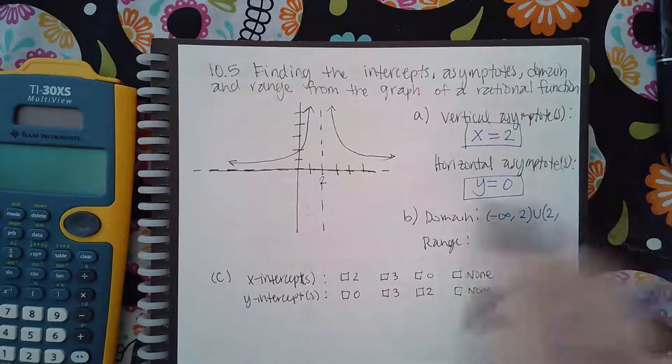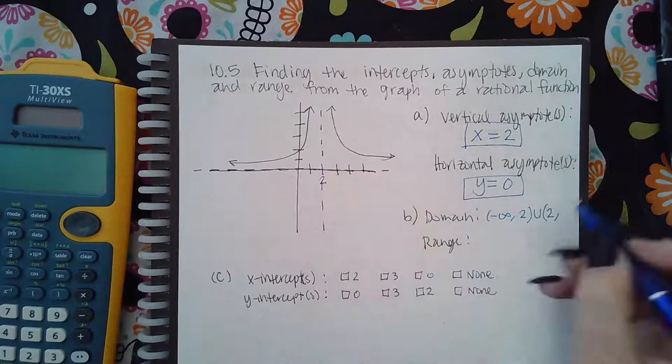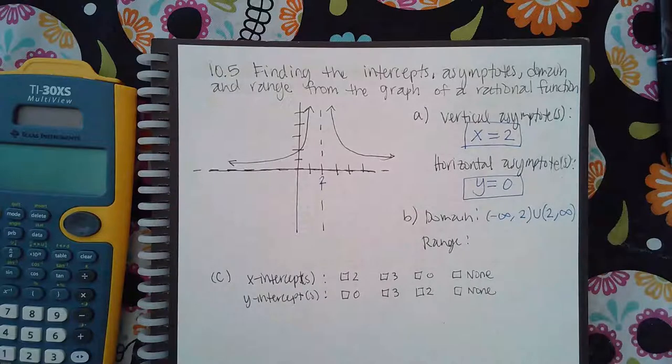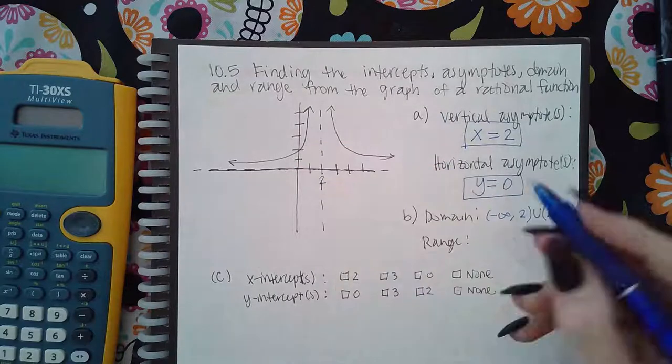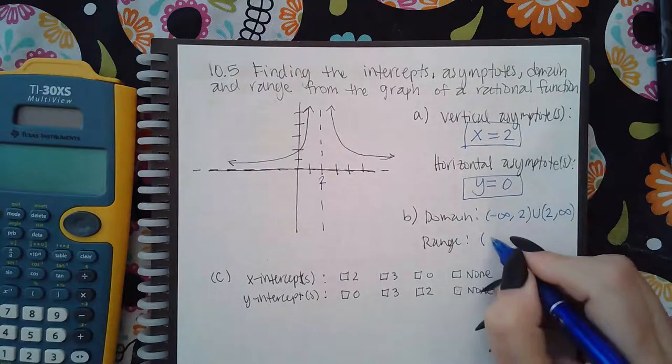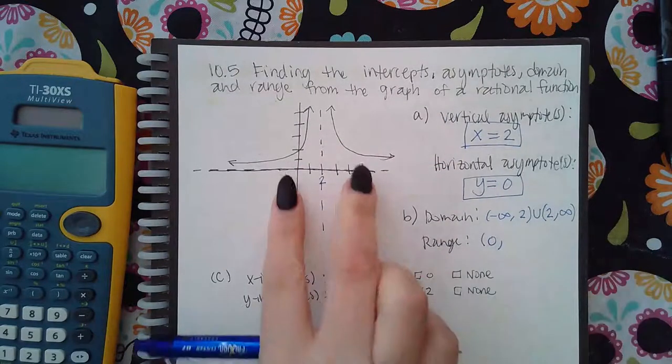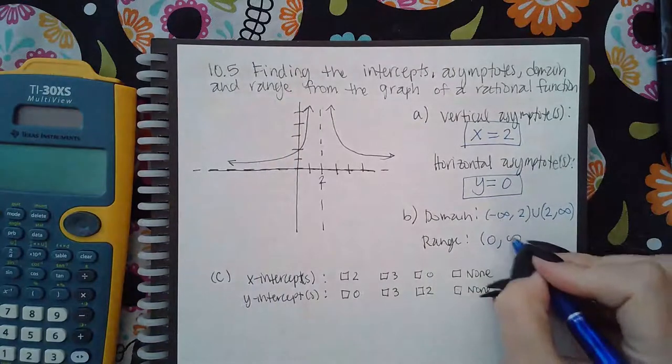Now the range: it doesn't start until it gets above the horizontal asymptote. The horizontal asymptote is at zero, then it goes up forever, so it goes to infinity.